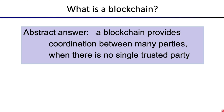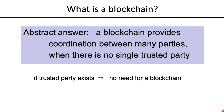Abstractly, a blockchain provides a way for multiple parties to coordinate when there is no single trusted party. They basically use the blockchain to perform all their coordination activities and they don't need to rely on any single trusted party. In any environment where there does exist a party that everyone trusts, typically there is no need for a blockchain.